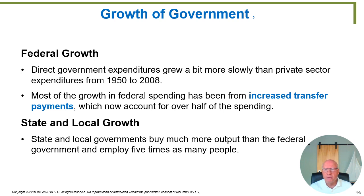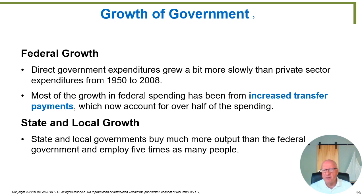Looking at federal government growth, it rose more slowly than the private sector from 1950 to 2008, meaning the government was growing, but the private economy was growing so much more rapidly that as a percentage of the entire economy, government expenditures on goods and services were declining. Most of the growth in federal spending has been from increased transfer payments such as Social Security — that's been the main growth driver at the federal level.